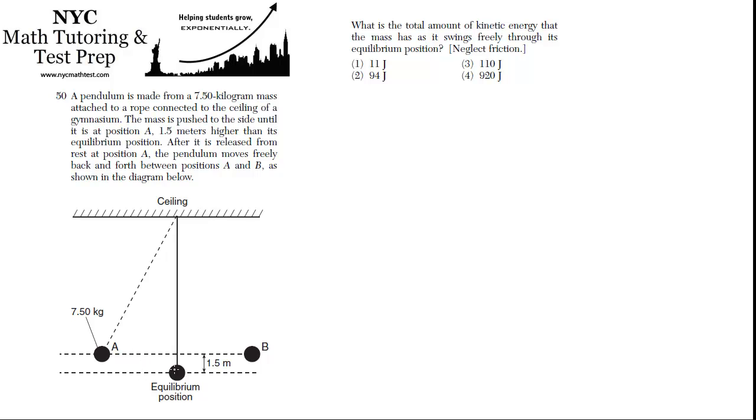So A is a meter and a half higher than the equilibrium position. After it's released from its rest position A, the pendulum moves freely back and forth between positions A and B as shown in the diagram below. It swings down to here and then over to here and it keeps swinging back and forth.